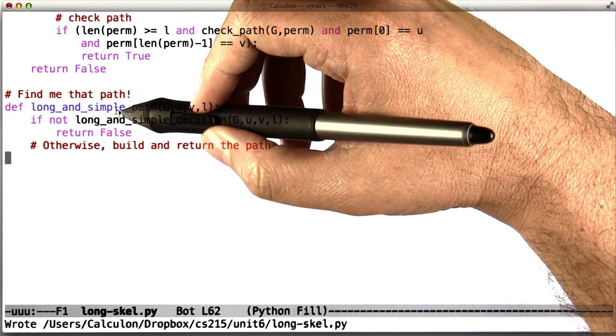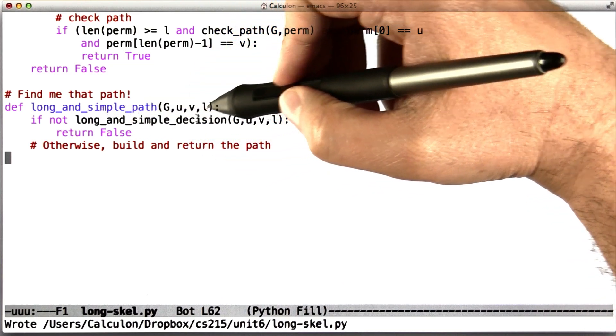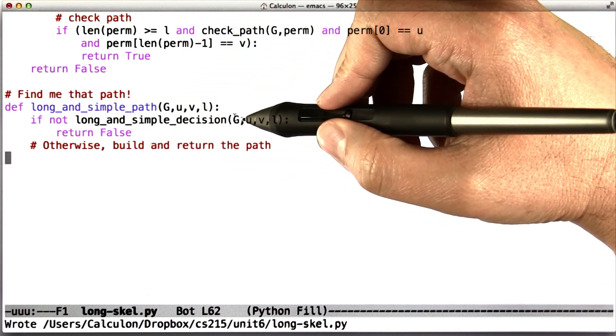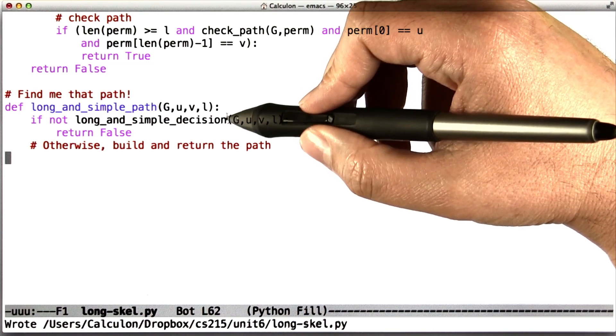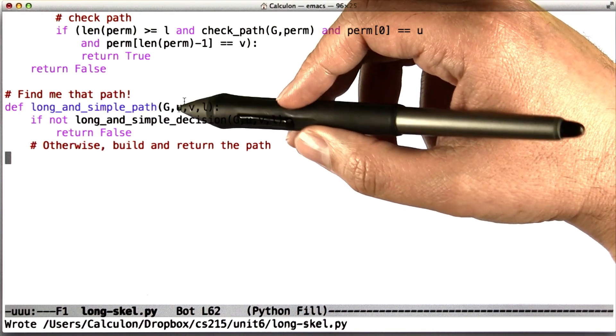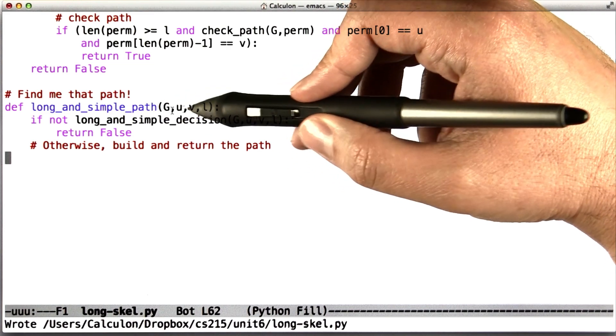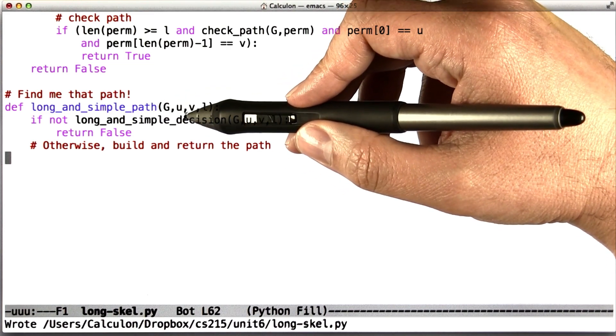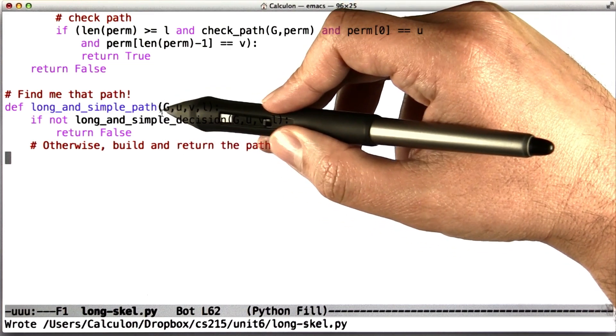And it's allowed to call long and simple decision with whatever it wants as many times as it wants, as long as it's a polynomial in the number of nodes and edges in the graph. And ultimately return the path if there is one.